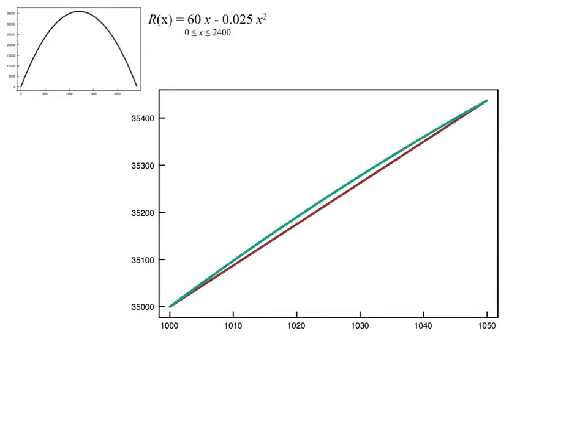So if we look at this graphically, the green graph represents the function. And I have the function there in the top left-hand corner so we can just remember what it looked like. But I'm looking at this function now only for x values or number of car seats between 1000 and 1050. So it's just a snapshot of a very small piece of the function.